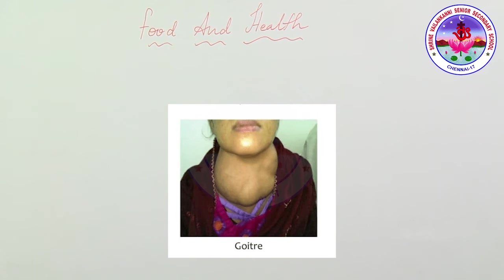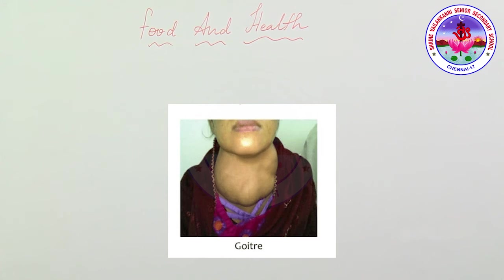Deficiency in vitamin B causes beriberi. Those suffering from beriberi experience loss of appetite, a sore tongue, and cracks at the corners of the mouth. The skin on the hands becomes rough, dry, and scaly. The nervous system and heart are also affected due to vitamin B deficiency.